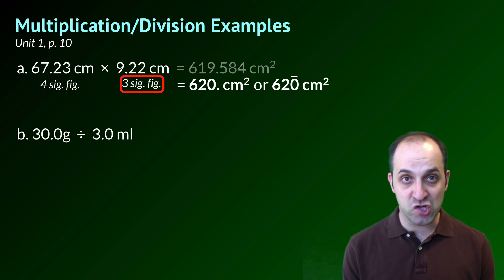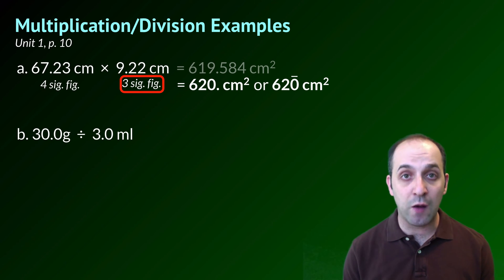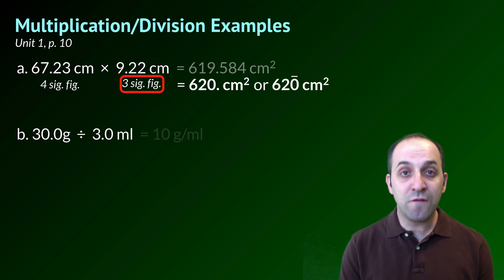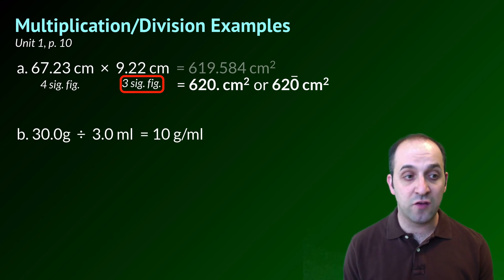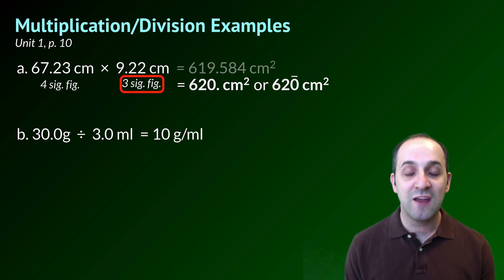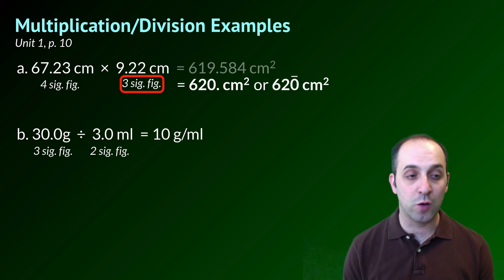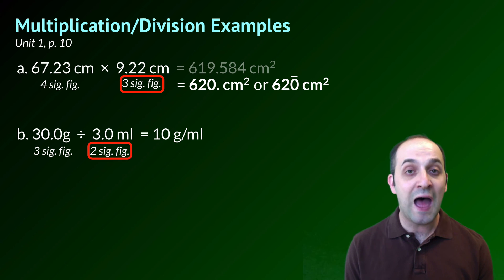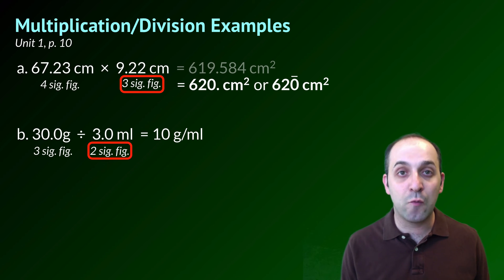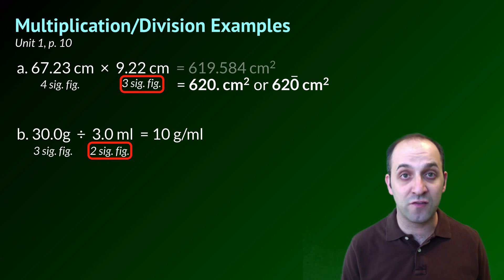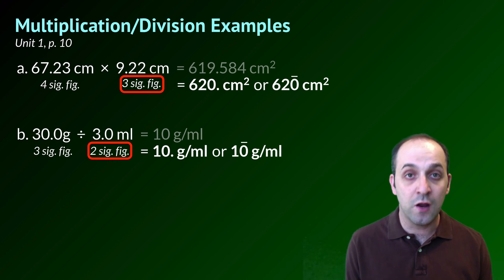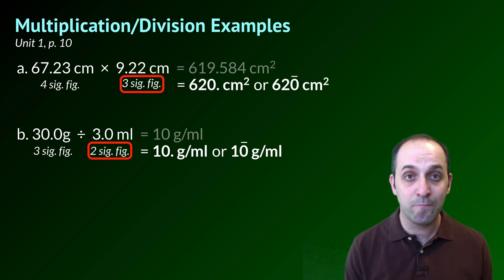In problem B, we're going to do a division. Take a moment and try it on your own, and then let's look at how we did this. 30.0 grams divided by 3.0 milliliters gives us 10 grams per milliliter. Then we look at the significant figures in each term — the first has 3 and the second has 2, so 2 significant figures will dictate the overall number in our answer. Remember that the way 10 is currently written indicates we do not know that zero with certainty — it's just a placeholder. We can show that zero is significant either by placing a decimal point after it or by putting a line over it.